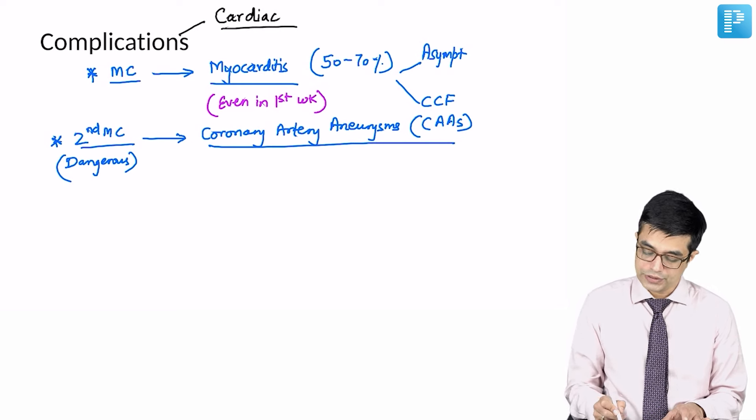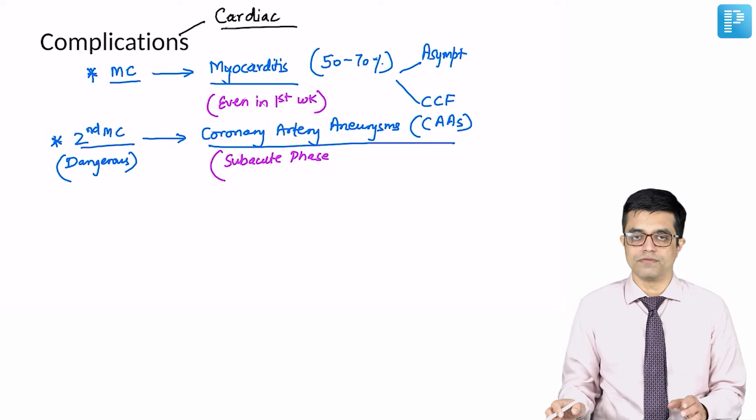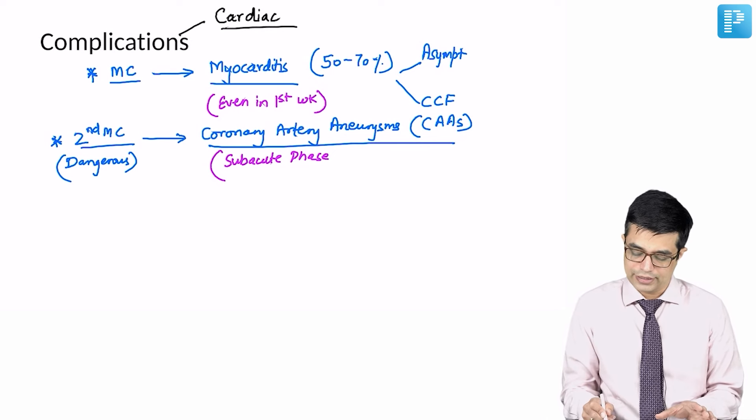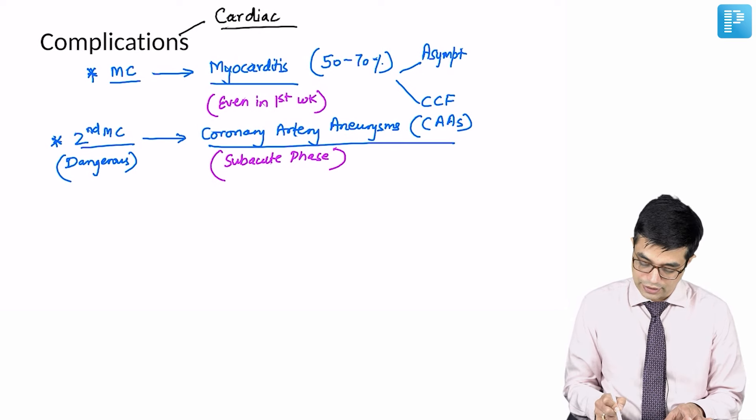Coronary artery aneurysms tend to develop in the subacute phase, so they will not be present in the first 10 to 12 days of the disease. So they tend to develop in the subacute phase. What is the risk of coronary artery aneurysm?